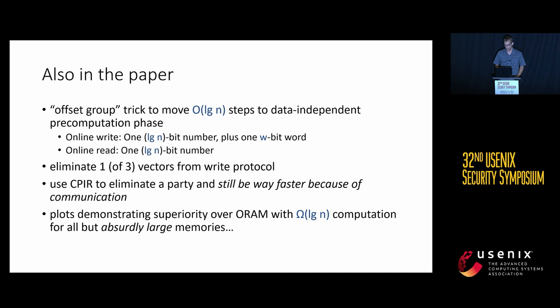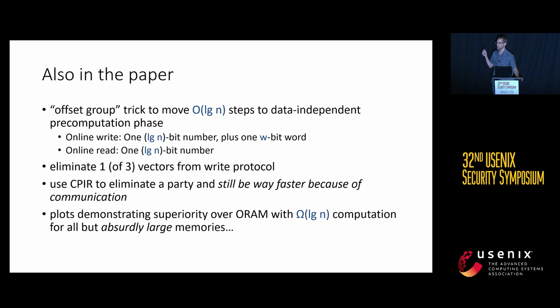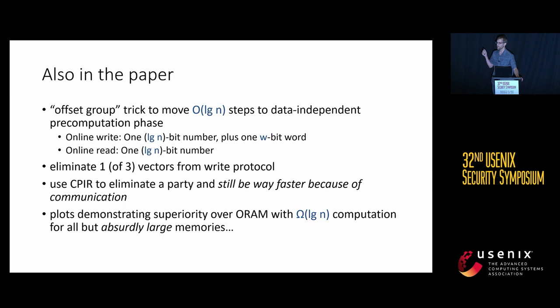In the paper we also have additional tricks. We move the logarithmic communication to a preprocessing phase, so in the online phase we send only the address and the value to write — the same as the most efficient conceivable non-oblivious protocol. We also have a CPIR-based approach to eliminate the third party and have a fully two-party protocol. Thank you.